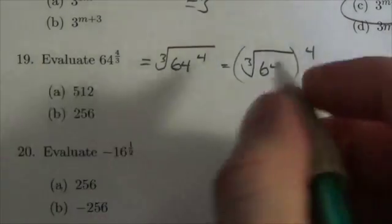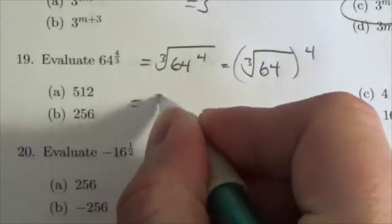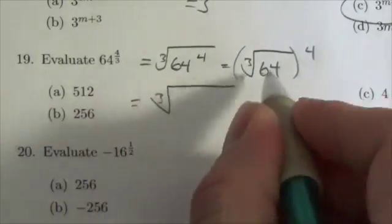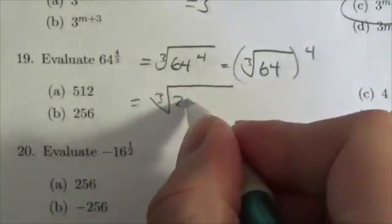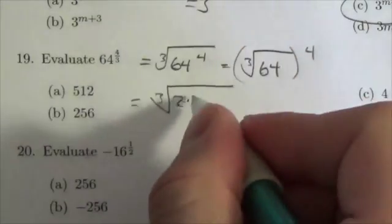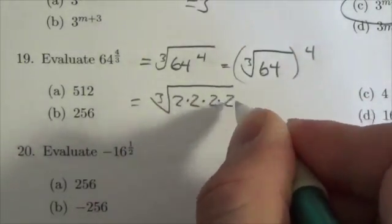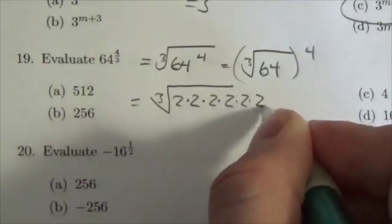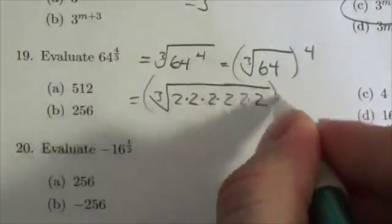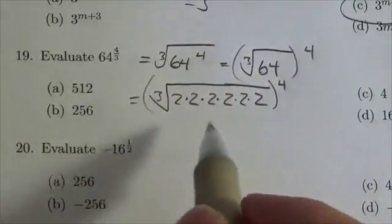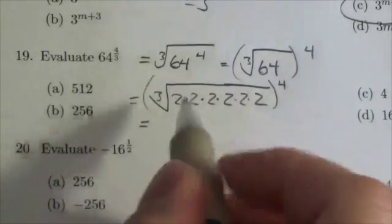So I'm going to take the cube root of 64. Now 64 is 2 times 32, 32 is 2 times 16, which is 2 times 8, which is 2 times 4, and 4 is 2 times 2. I got a whole bunch of twos here, all to the 4.